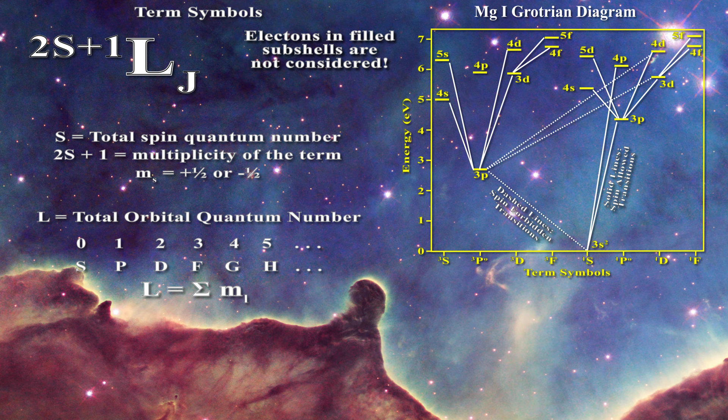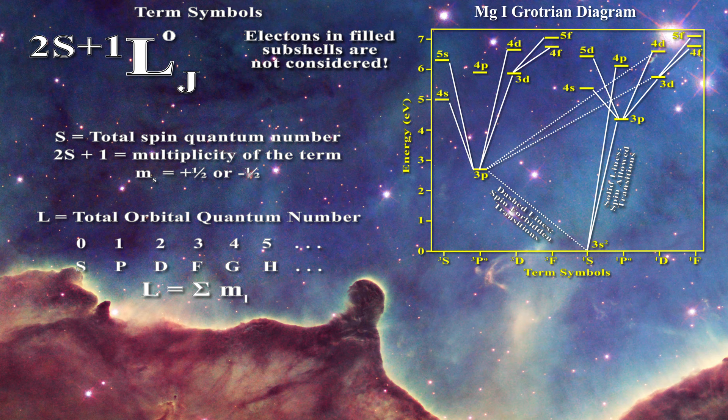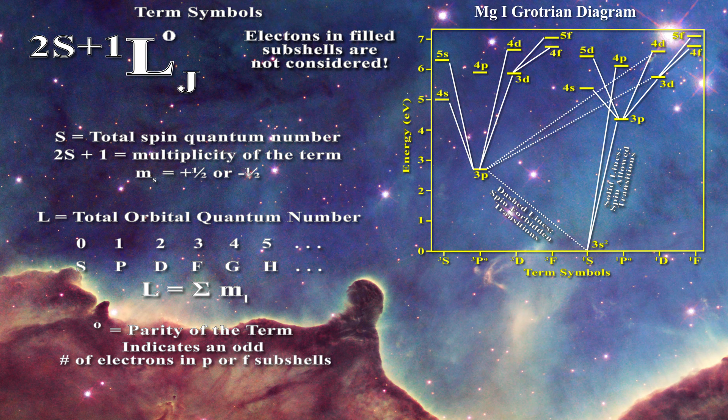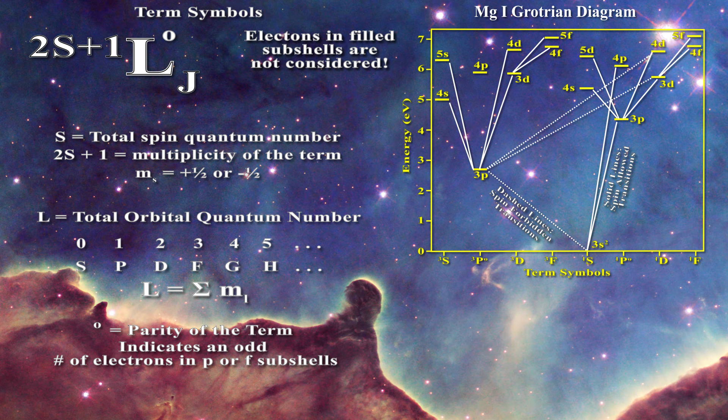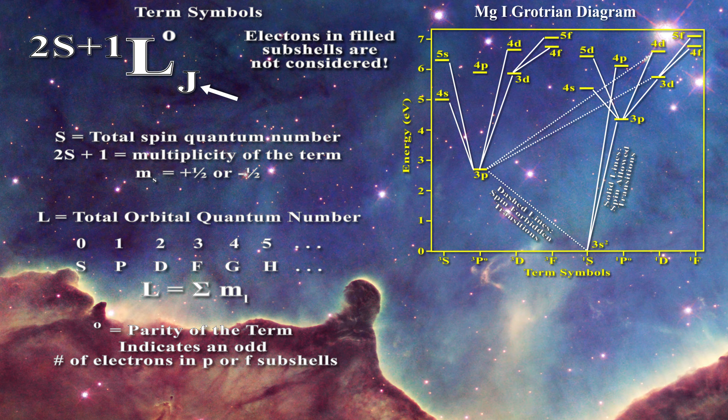At times one will note a little superscript O on the upper right of the term symbol. This refers to what is known as the parity of the term. It will be present if there is an odd number of electrons in either p or f subshells. If the number of electrons in such shells is even, or if there are only electrons in s or d shells, then the parity is even and no superscript O is found.